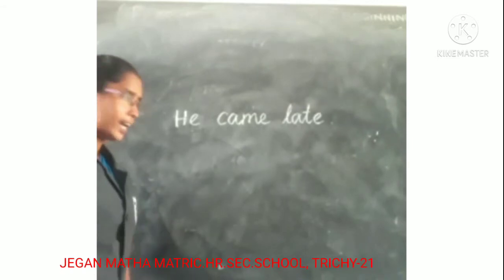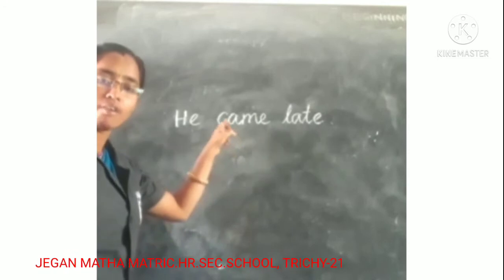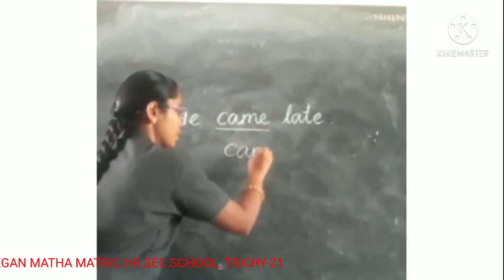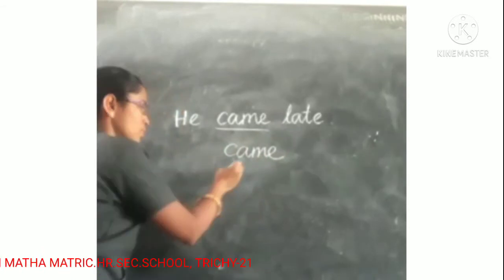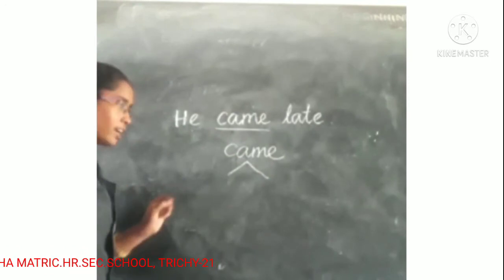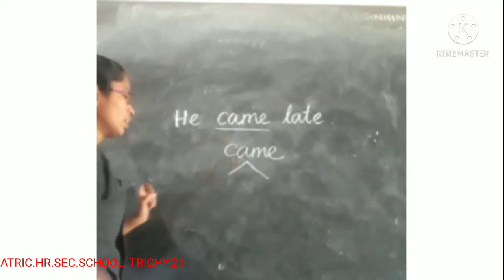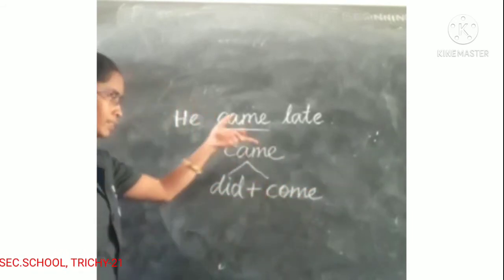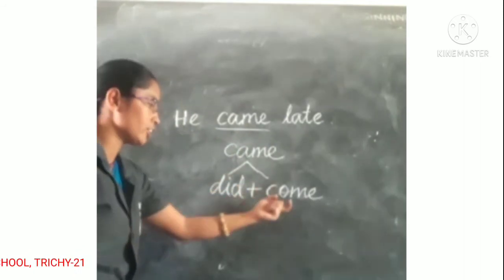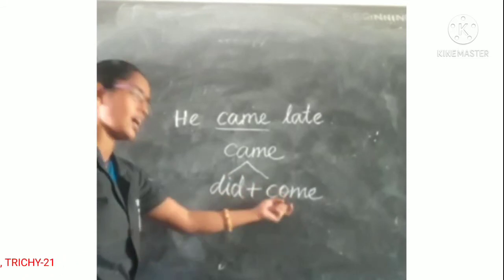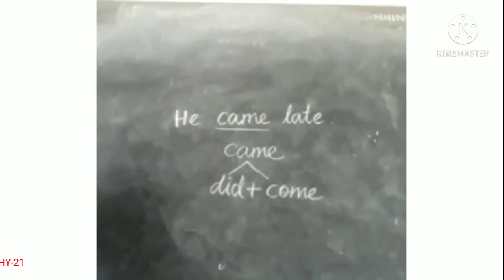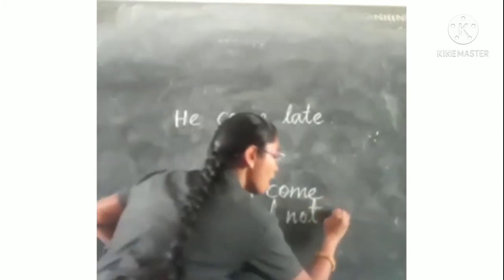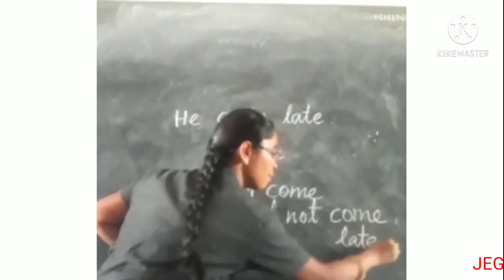Look at this sentence: 'He came late.' It is a past tense sentence. The verb 'came' is the past form of 'come'. For past tense, we use 'did'. We divide the verb as 'did + come', and after 'did' we must use the present form of the verb. So the negative is: 'He did not come late.'